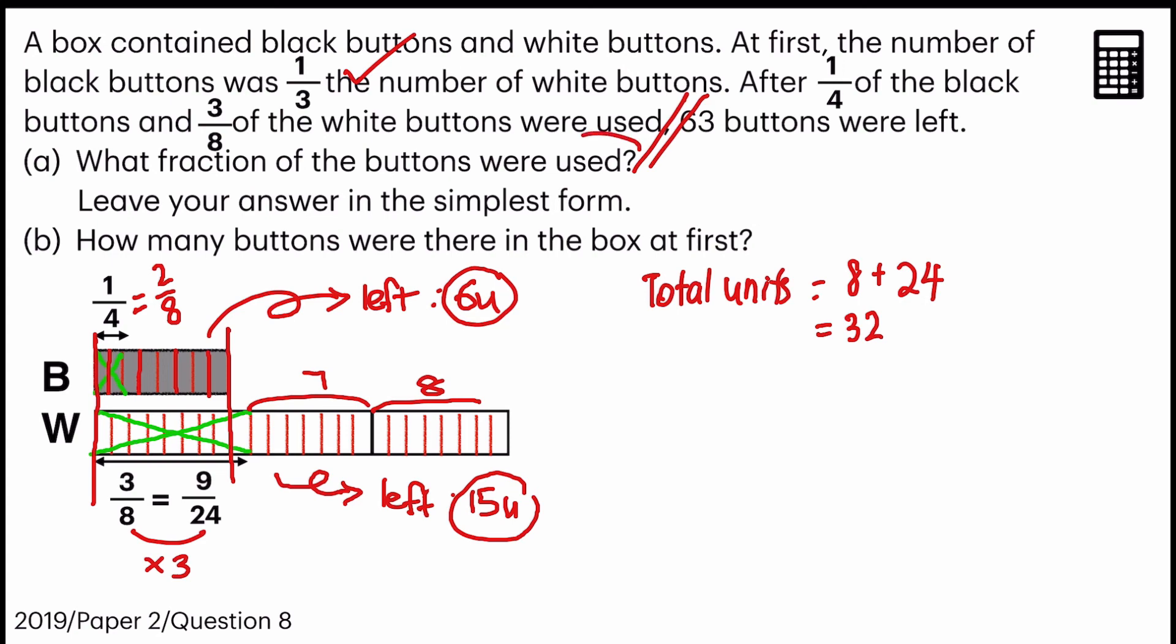And how about the portions that were used? I can straight away come up with the fraction now. So it's out of 32. And we have two that's used here, and we have nine that's used here. So my answer is 11 out of 32. Leave your answer in the simplest form. 11 out of 32. Can we simplify it further? No. So that is our answer for A.